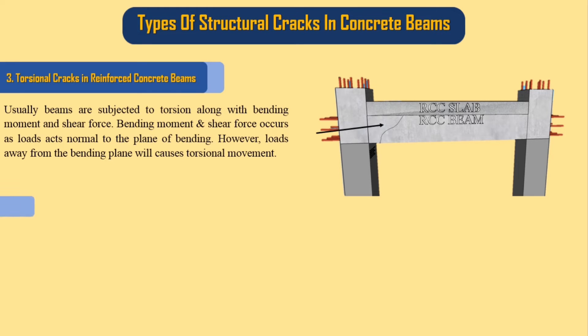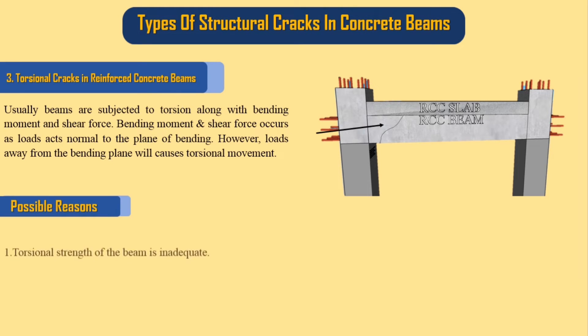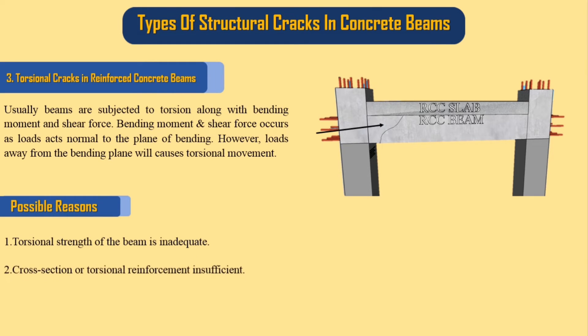Possible reasons for torsional cracks: 1. Torsional strength of the beam is inadequate. 2. Cross-section or torsional reinforcement is insufficient.